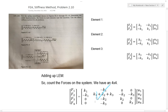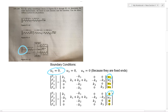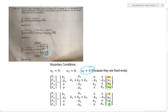The next step is to apply our boundary conditions. Looking at the problem, this node is fixed to a wall, so its displacement is zero. Node three is also fixed to a wall, so that's zero. And this node is also fixed to a wall, so that's zero. The reason these displacements are zero is because they are fixed ends. And we're done with our boundary conditions.